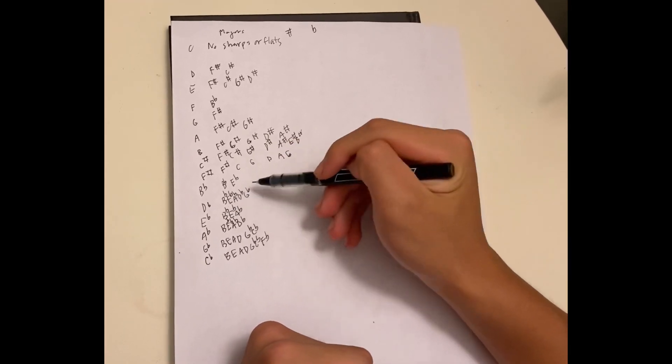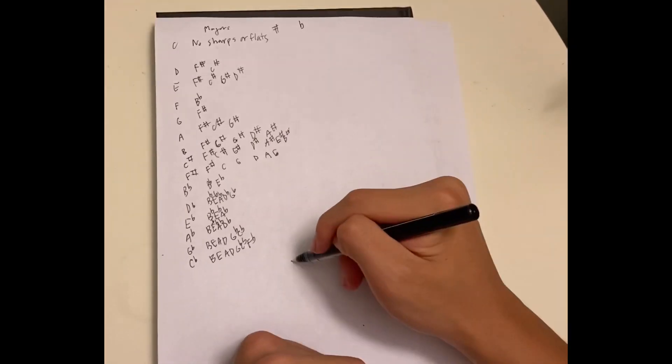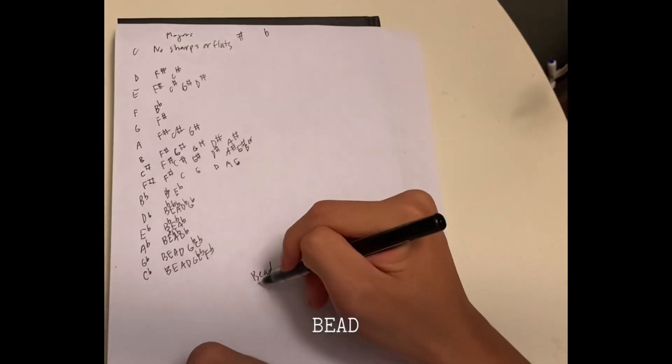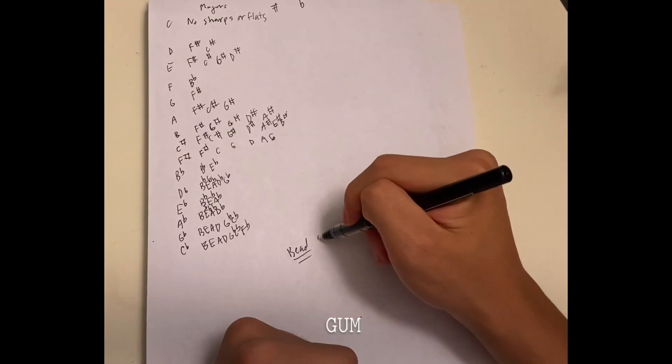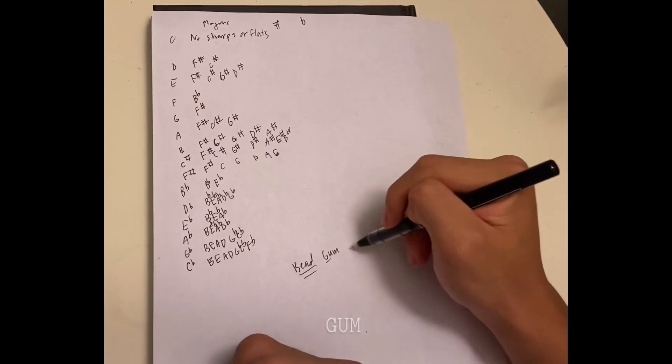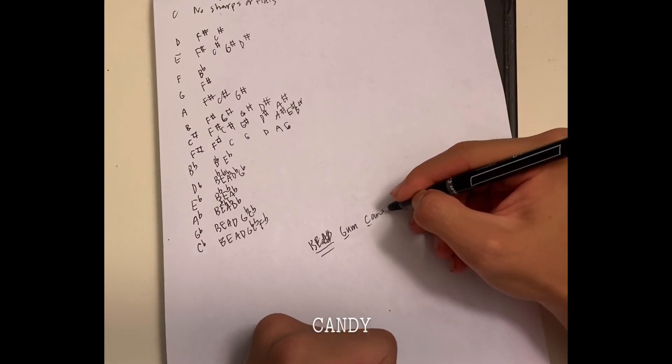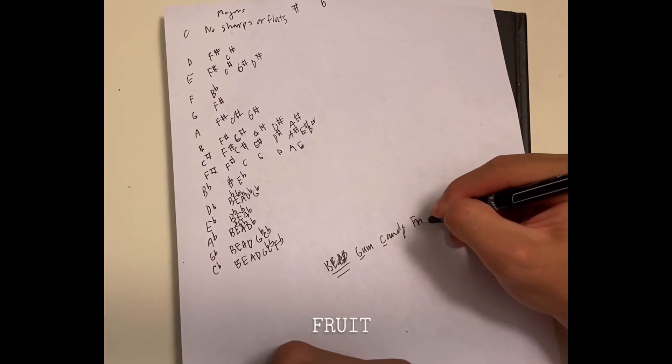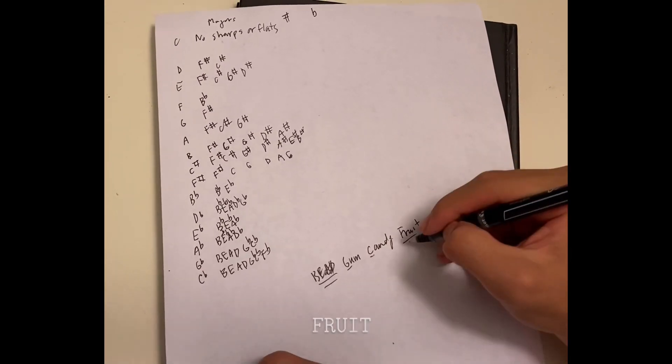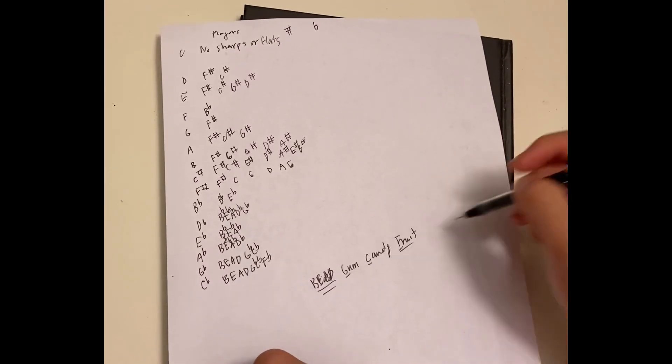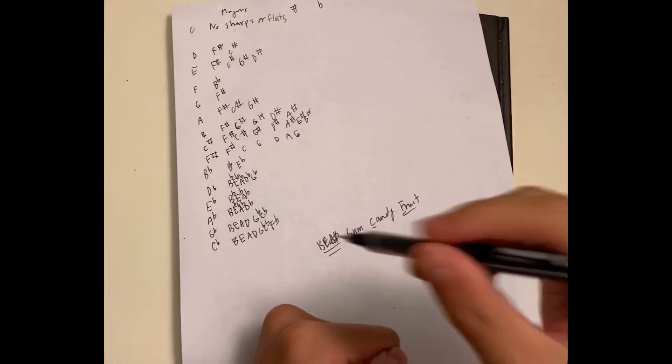And I got taught Bead Gum Candy Fruit as you can remember, because bead just spells it out, right? All the flats. Gum just stands for G. Candy, it starts with a C. And then I think this would be helpful if you tried memorizing that.